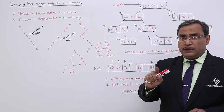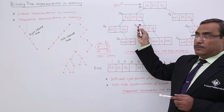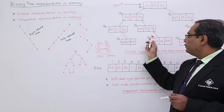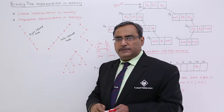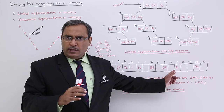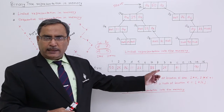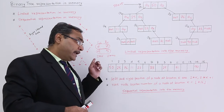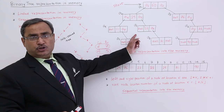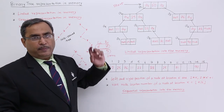In linear representation, this node knows who are its children, but it does not know who is its parent — so you cannot move up, but you can move down. But in case of sequential representation, we can move both towards children (using 2*k and 2*k+1) and towards the parent (using floor(k/2)), so we can move to and fro. But that is not possible in case of linked representation — you can only go from top to bottom; bottom-up traversal is not applicable there.